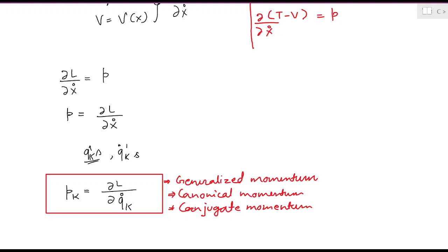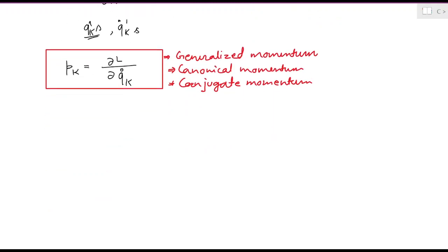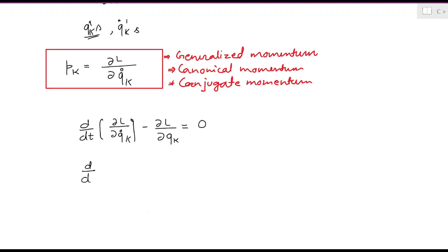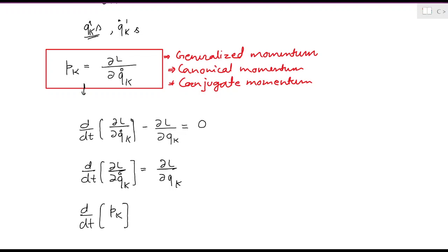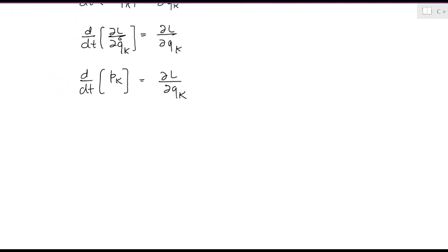Now we know for a conservative system how the Lagrangian equation is defined. The Lagrangian equation for a conservative system is d/dt(δL/δq̇ₖ) − δL/δqₖ = 0. So rearranging, we have d/dt(δL/δq̇ₖ) = δL/δqₖ. Now, since we just defined pₖ = δL/δq̇ₖ, we can replace that term, giving us d/dt(pₖ) = δL/δqₖ.